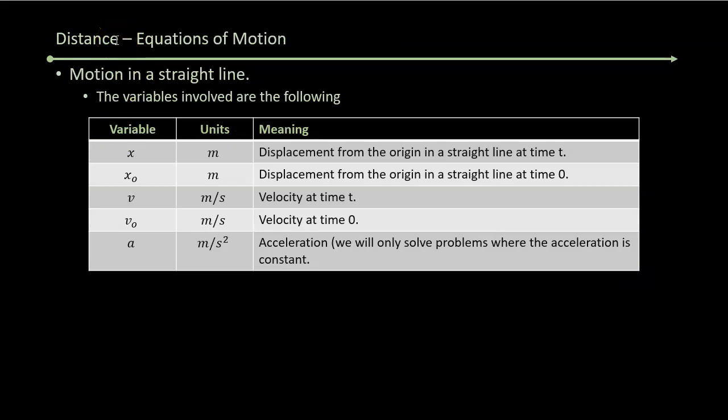The distance equations for motion in a straight line that we're going to use involve several variables. Those variables are x, which has units of meters and is displacement from the origin in a straight line at time t. x naught is the same thing, except that's where you are at time 0. v is your velocity at time t. That's in meters per second. v naught is your velocity at time 0. And in the problems we're doing, a is the acceleration, which is meters per second squared.